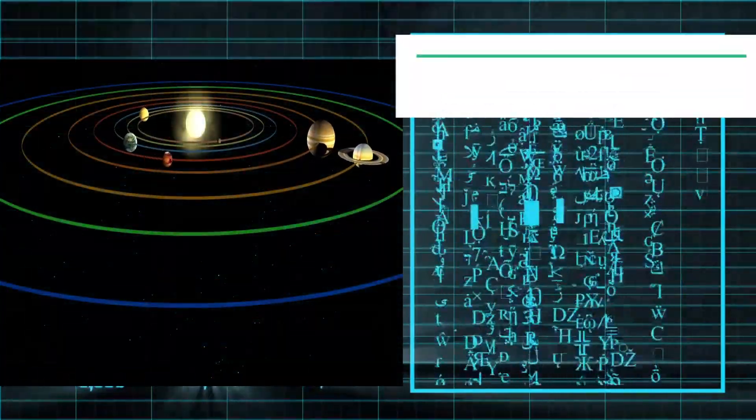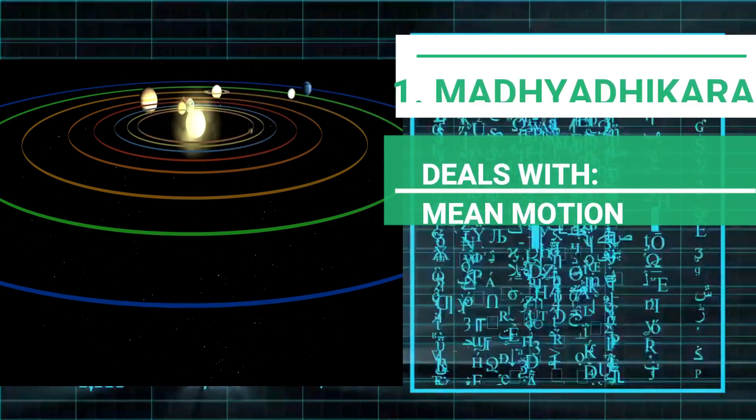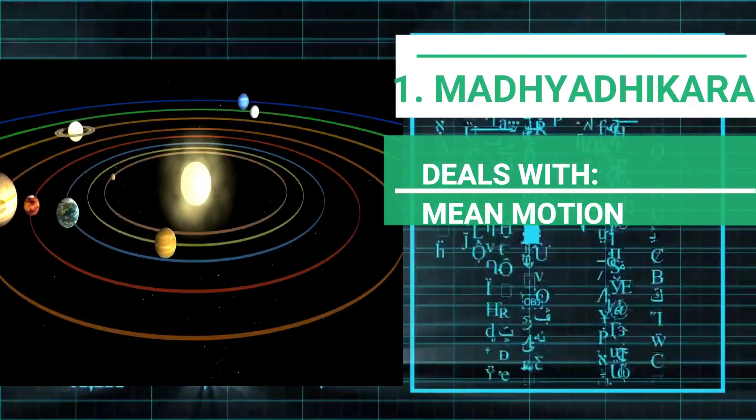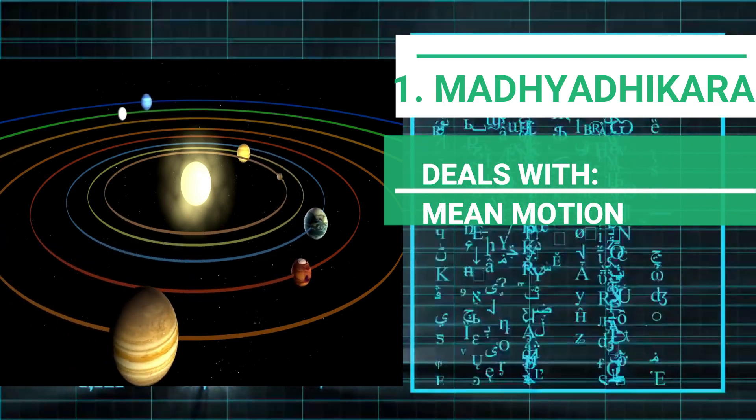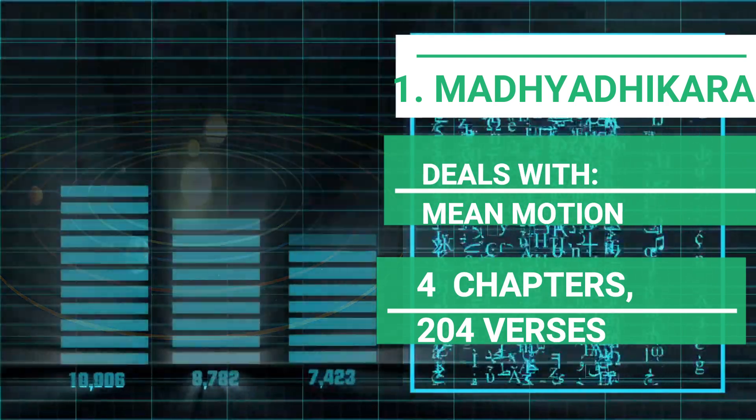Madhyadhikara deals with the angular speed required by a body to complete one orbit, i.e. mean motion. There are 4 chapters and 204 verses or slokas.